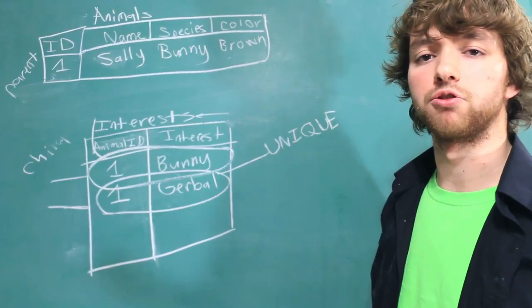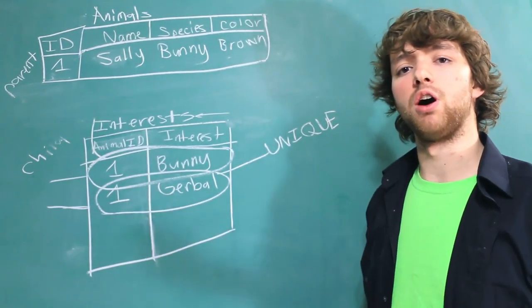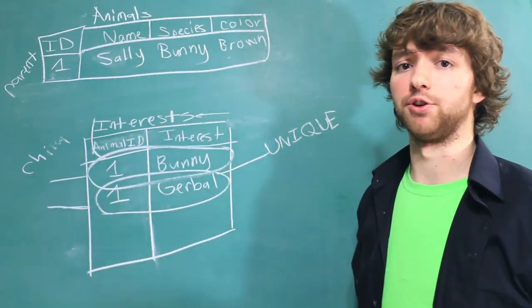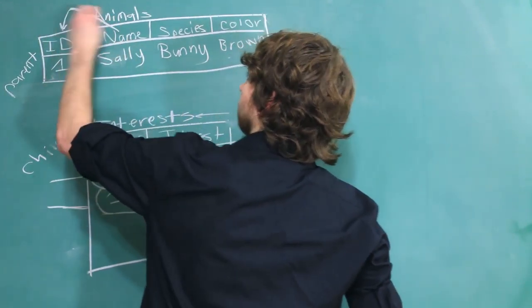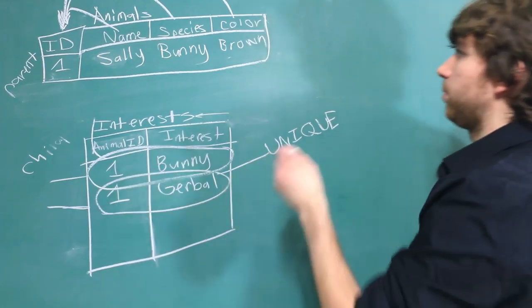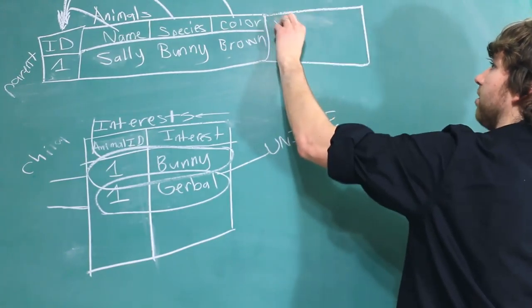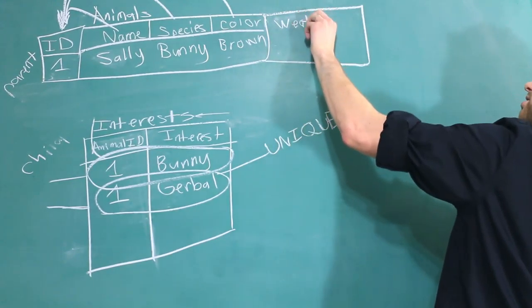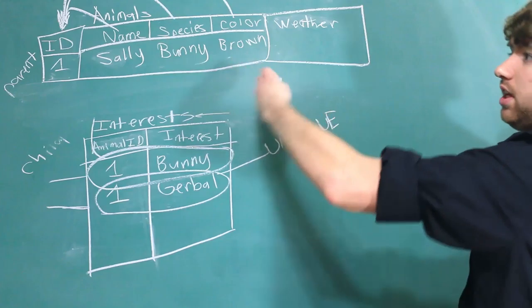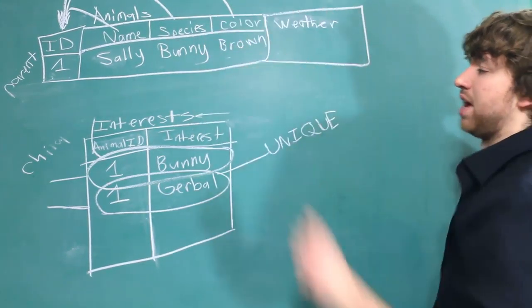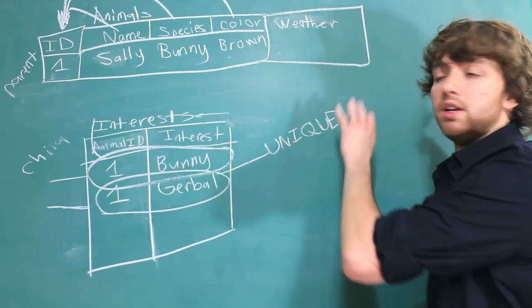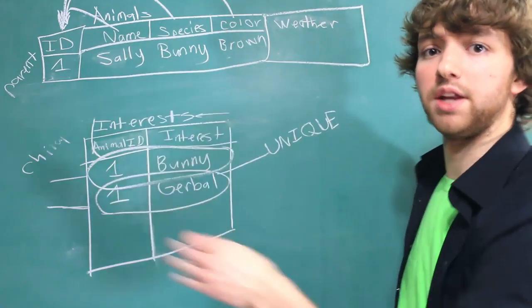And the last thing when you're working on first normal form, make sure each column is actually about whatever you're trying to describe. These all depend on the primary key. But you wouldn't want something in here like weather. The weather has nothing to do with the animal. So in this situation, this is not dependent on the key. And we always want every single column to depend upon the key.